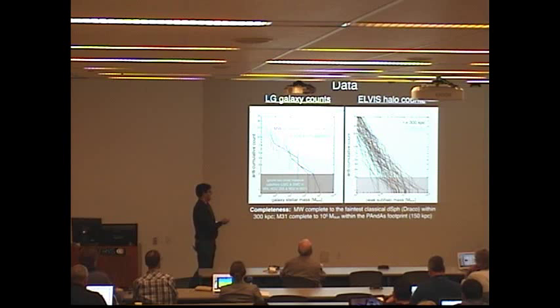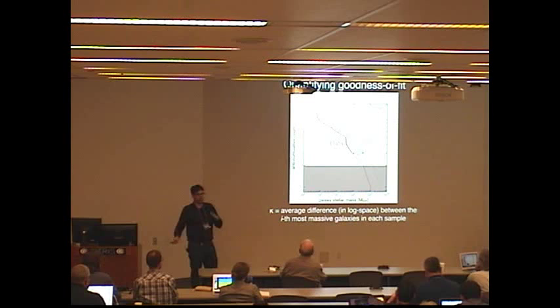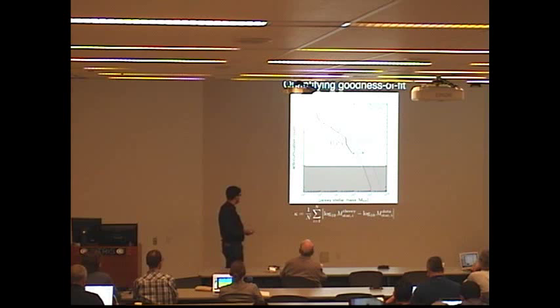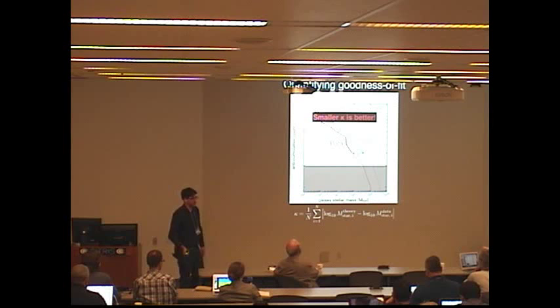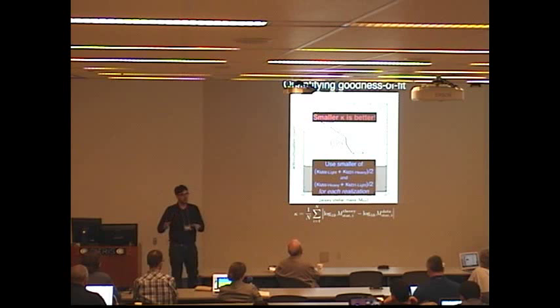So how do we figure out, once we take these halo mass functions, apply some M-star M-halo relation, add scatter to it, how do we compare them to the actual galaxy counts? I didn't know about Frank's work, so I made up my own statistic, which turns out to be pretty similar. I'm going to use the statistic kappa, which is the average distance in log space between the ith most massive galaxy in the theory sample and in the data sample. Essentially we're taking the average spacing between these two lines. A smaller kappa is better—kappa of zero means they lie directly on top of each other. Because we're trying to minimize kappa, we're going to allow both the heavy host and the light host in each pair to host the Milky Way or M31, and on a realization-by-realization basis, pick the one that works out best.